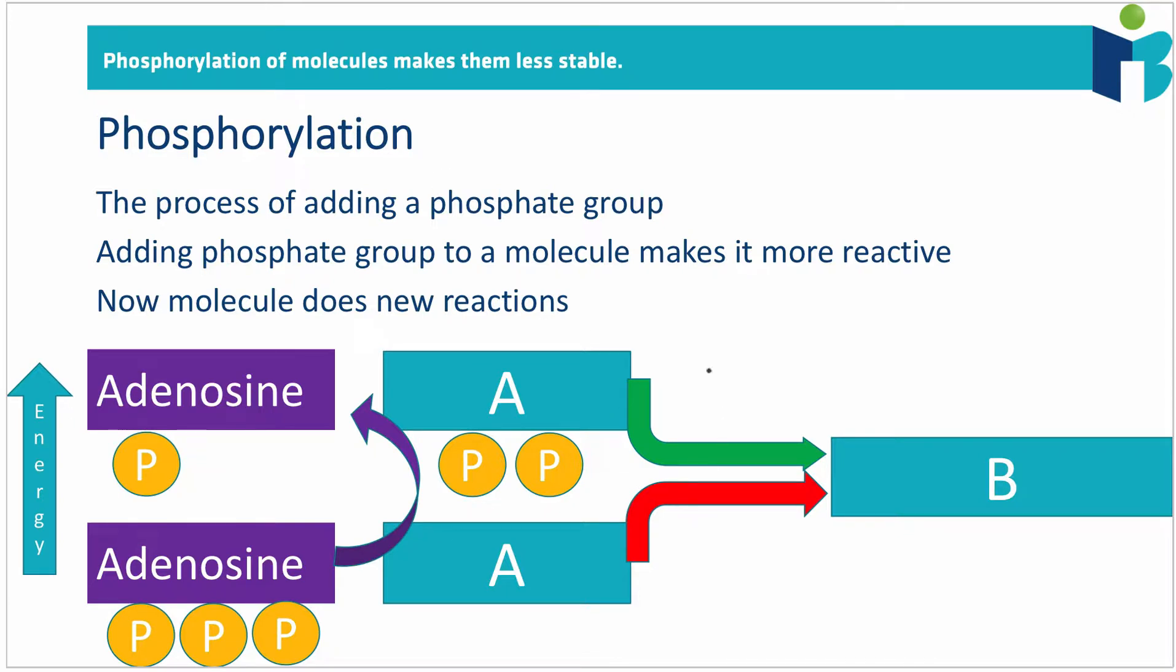What we can see in this diagram down here is that if you have molecule A and you transfer two phosphate groups from adenosine triphosphate, also known as ATP, so if ATP gives two phosphate groups to A...